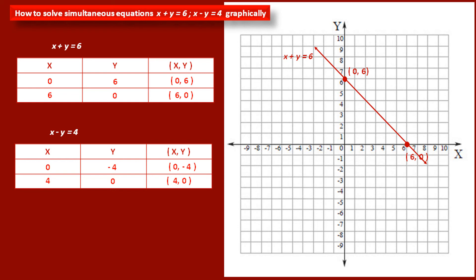Now we plot these two points on the graph to draw the second line. The first point (0, minus 4) has x coordinate 0 and y coordinate minus 4, so it lies on the y-axis in the negative direction at minus 4. The second point (4, 0) has y coordinate 0, so it lies on the x-axis in the positive direction at 4. Using these two points we draw a straight line, which is the graph of our second linear equation x minus y equal to 4.